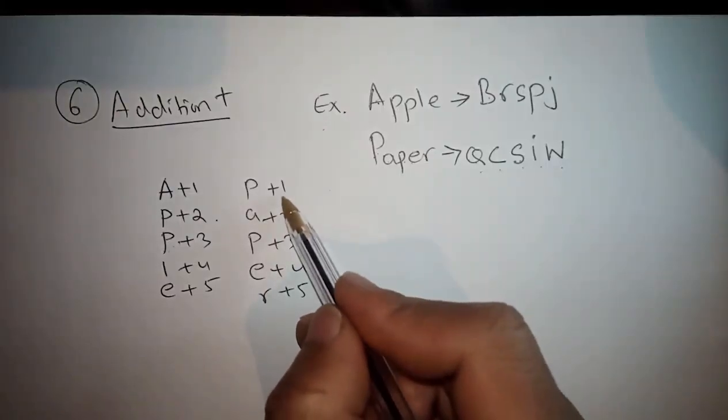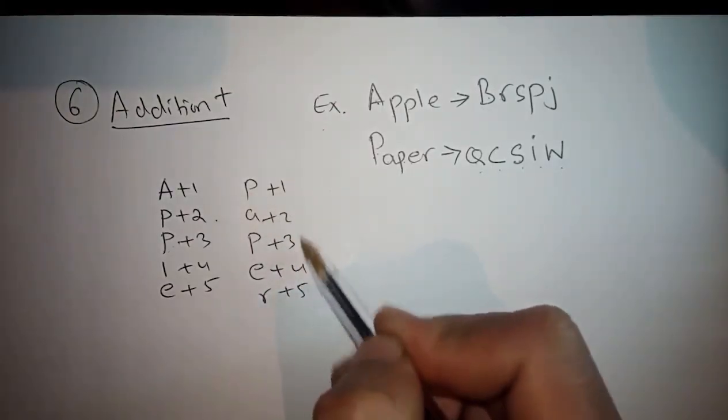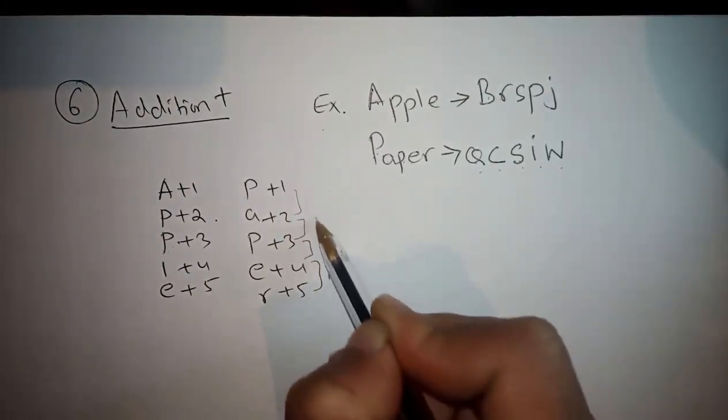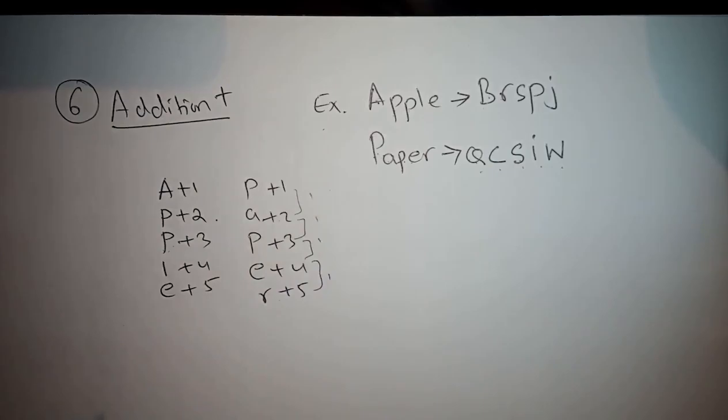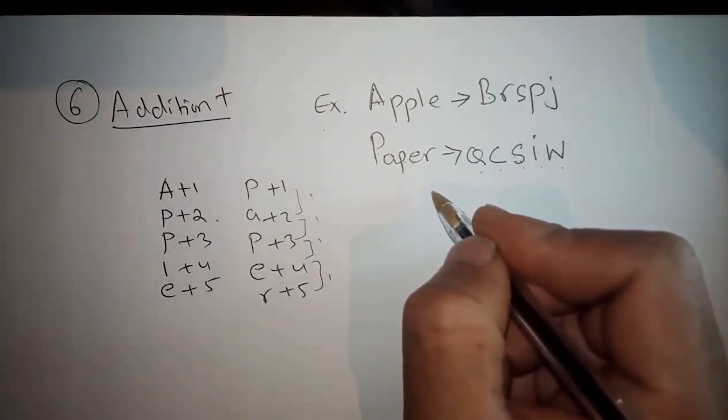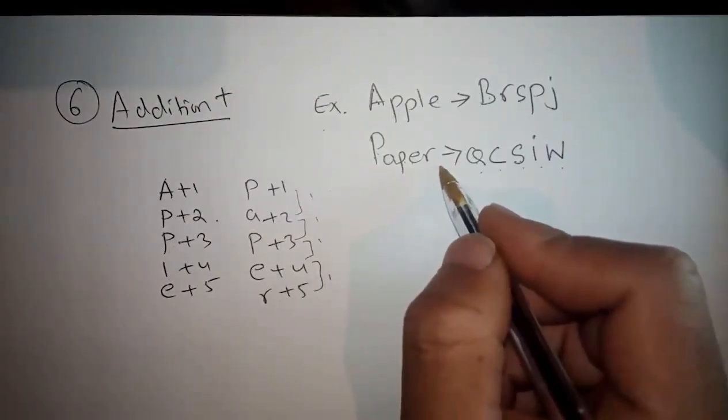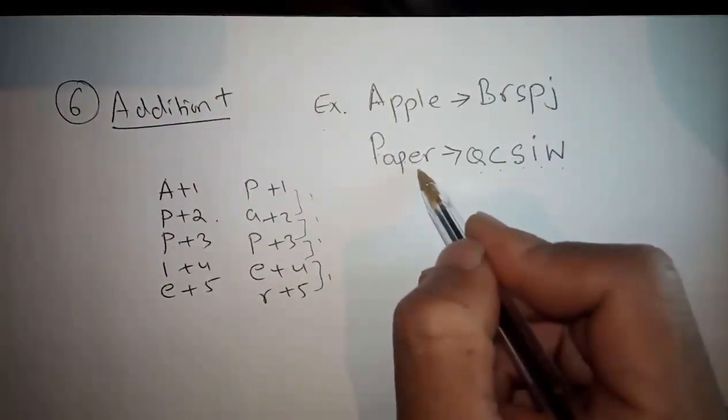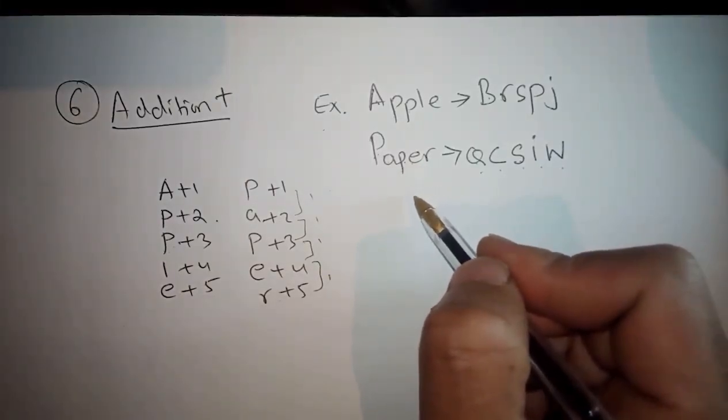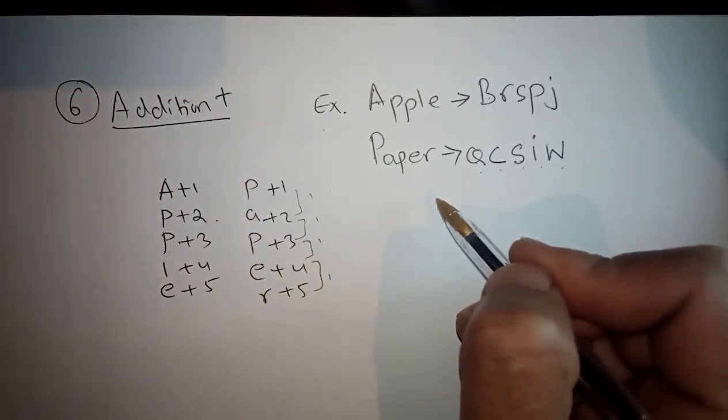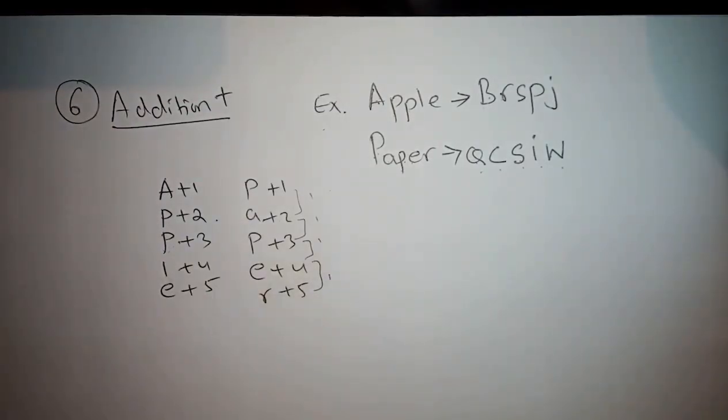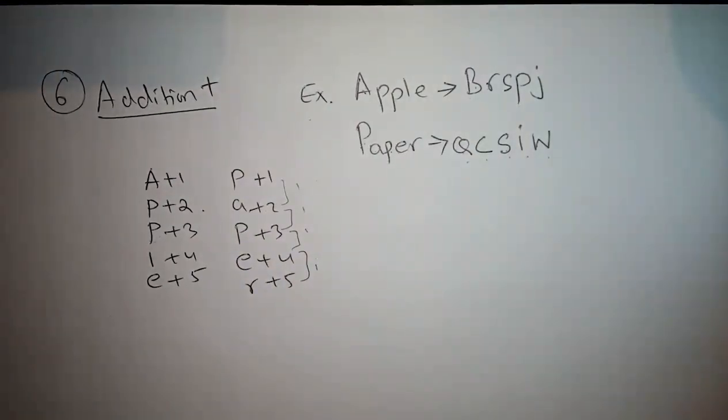In this case, Addition Plus gives us differences of one each time - one, one, one, one, one - only a difference of one. So this is Addition Plus coding and decoding. You should be aware that there are many types. We need some time to cover all the types, so we'll continue discussing types and then solve past papers and questions.